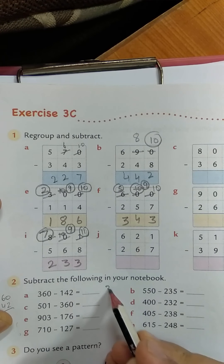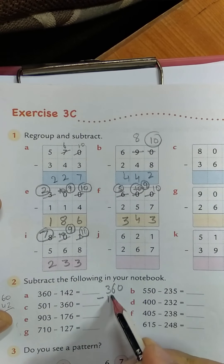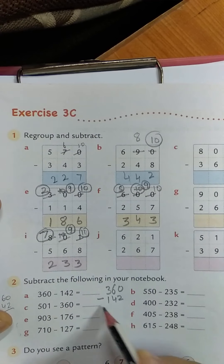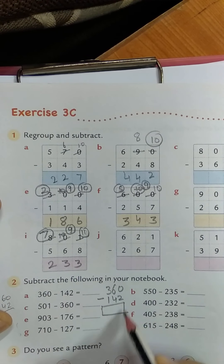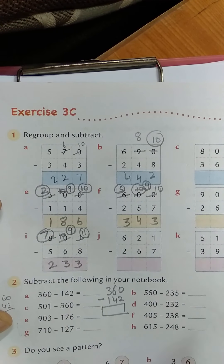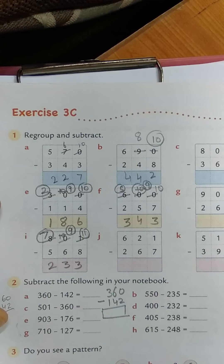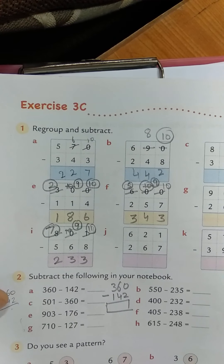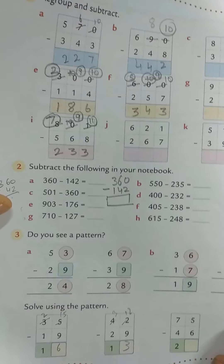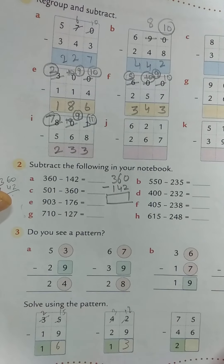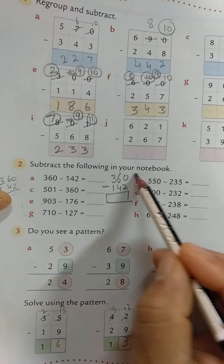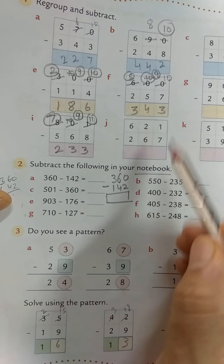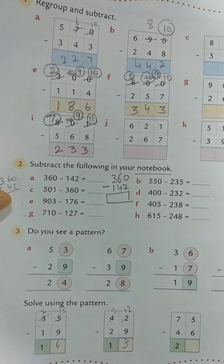Question number 3 uses patterns — that is already done for you in the book, so it is easy. Questions 1 and 3 are done in the book; question number 2 you write in the notebook in column form and then subtract.